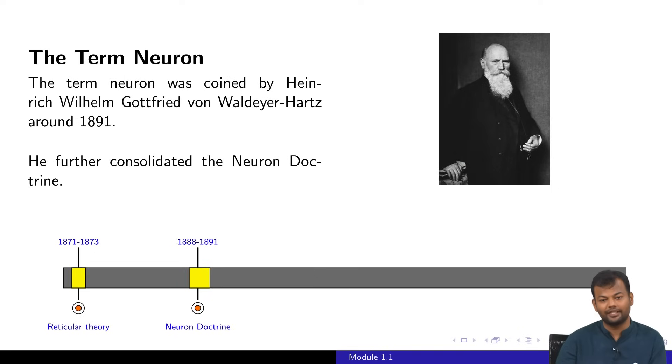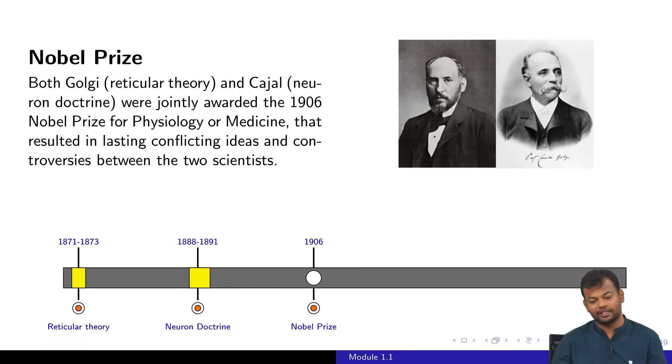Now here is a question. Around 1906, when it was time to give the Nobel Prize in medicine, there were two theories: reticular theory, which is a single cell, and the neuron doctrine, which is a collection of neurons. What do you think? Which of these two proponents of these two different theories would have got the actual Nobel Prize for medicine?